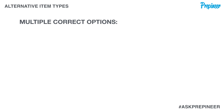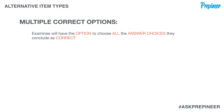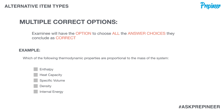Multiple correct options are what they sound like — you as the examinee will have the option to choose whichever choice you see as correct and select it. There could potentially be more than one correct answer, and you have the opportunity and obligation to choose wisely and correctly.